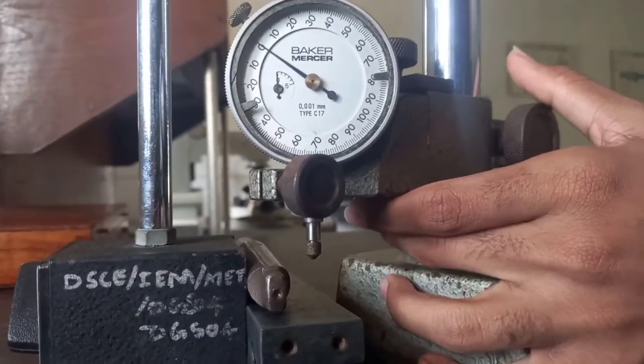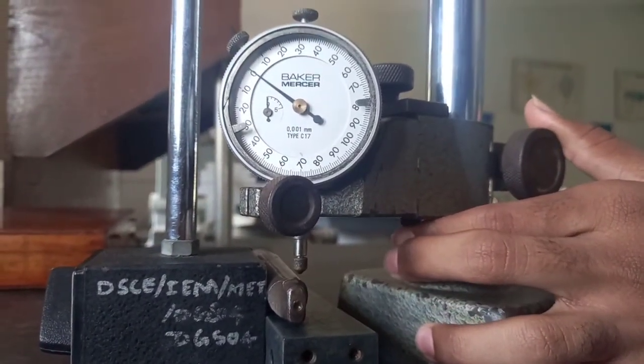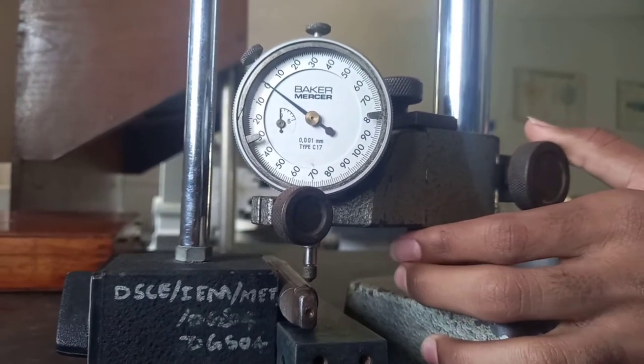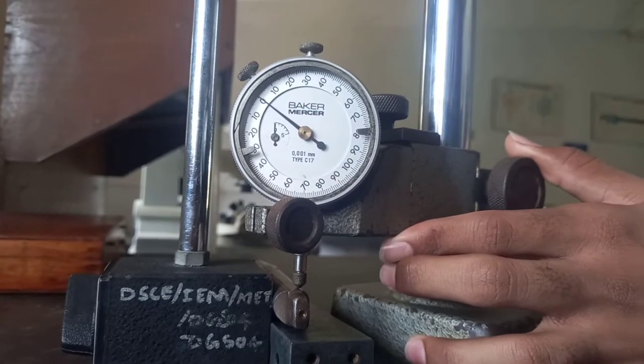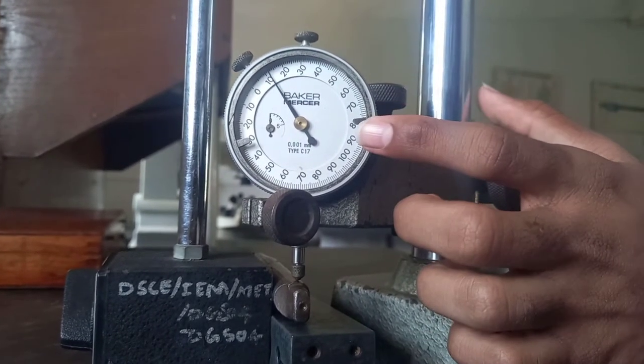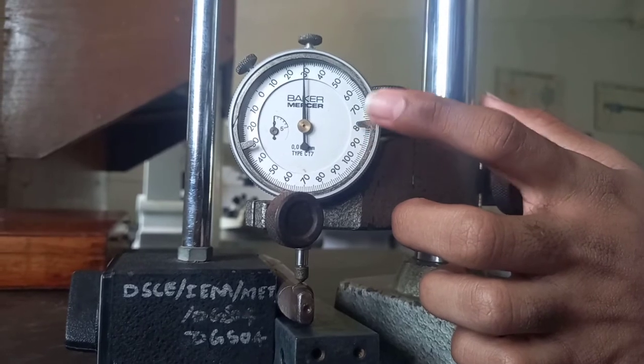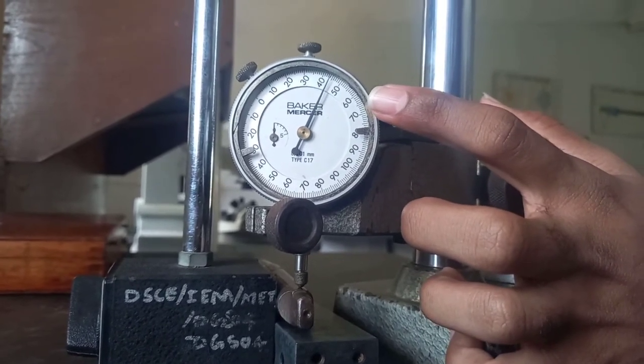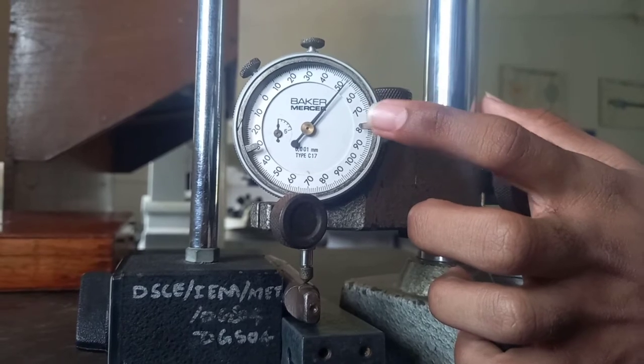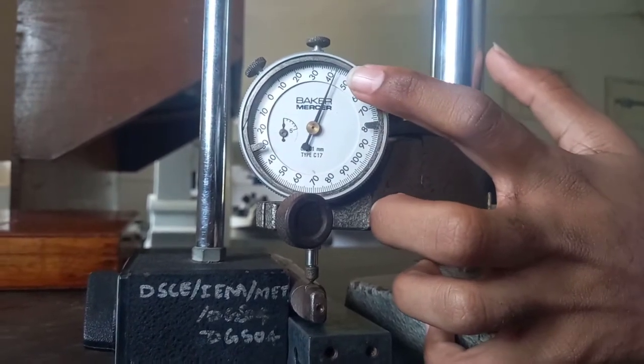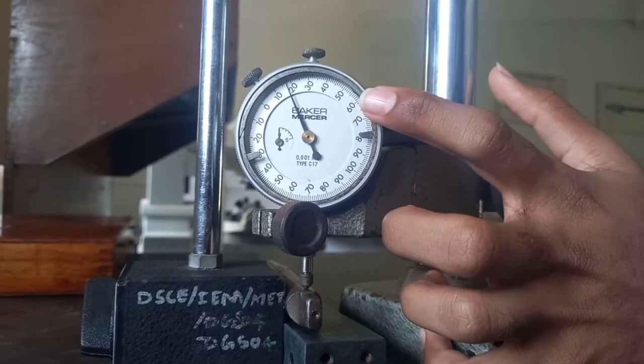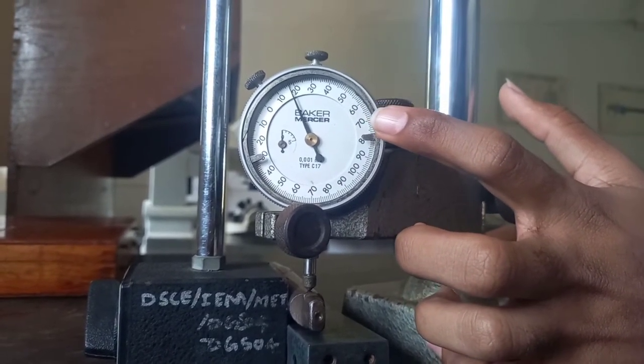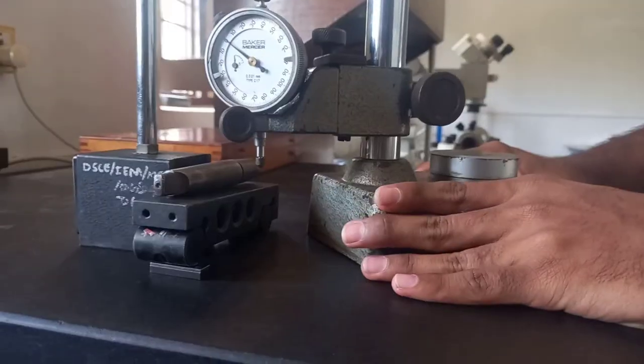We will measure the angle. You can see the deflection when the dial gauge touches the specimen, so we need to consider the maximum deflection. We can see the dial gauge decreasing as I move forward, so the maximum deflection was 50.